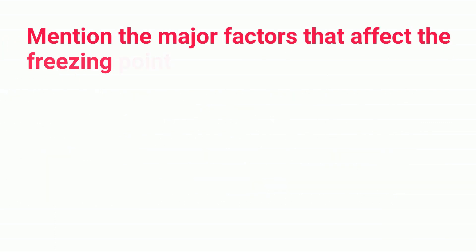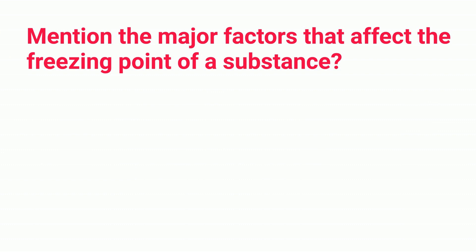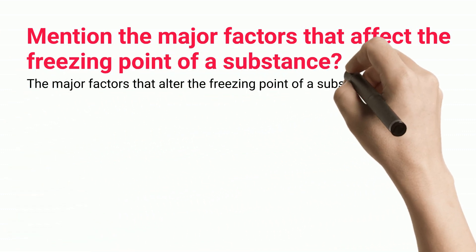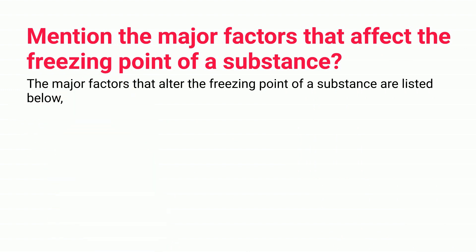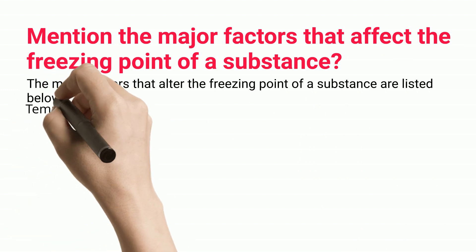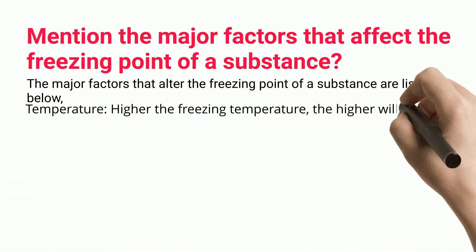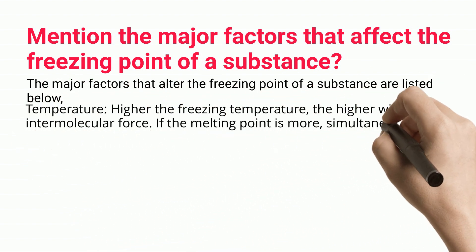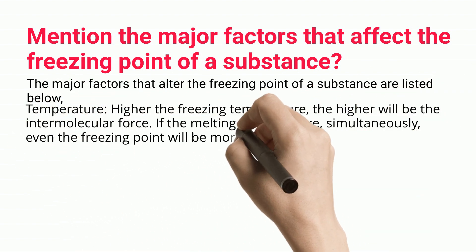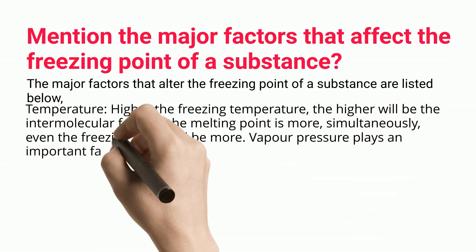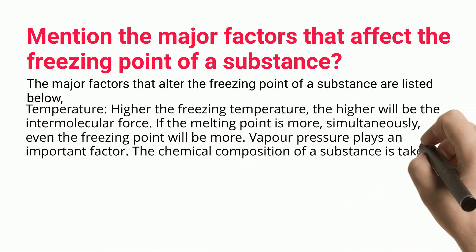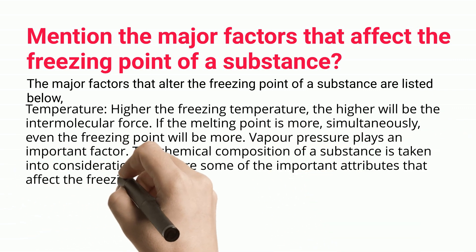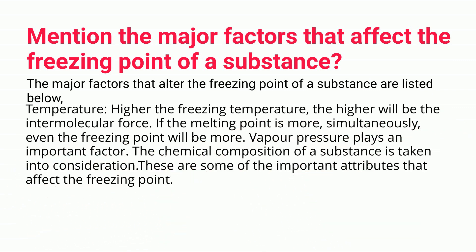The major factors that alter the freezing point of a substance include: temperature — the higher the freezing temperature, the higher the intermolecular force; melting point — if the melting point is more, simultaneously even the freezing point will be more; vapor pressure, which plays an important role; and the chemical composition of the substance.